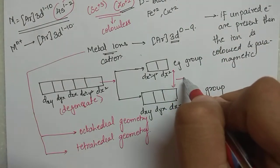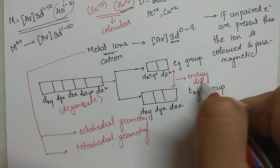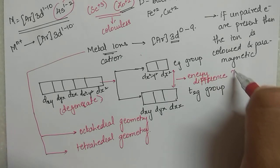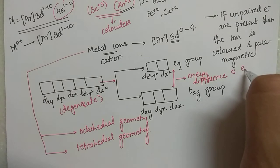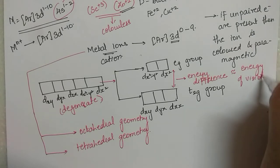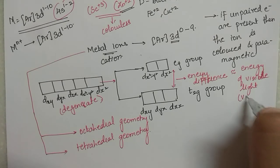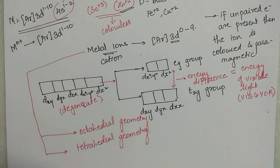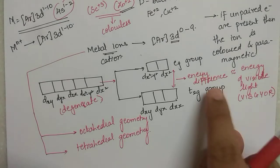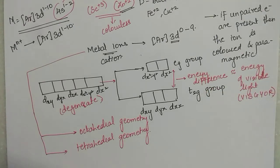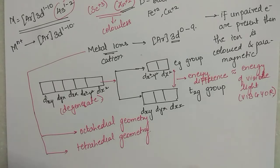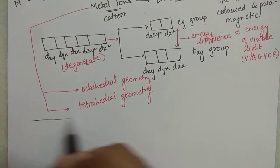All these things are important because the energy difference between the two groups is not very large — it is almost equal to the energy of visible light, which is VIBGYOR. Because this energy difference equals the energy of one of these colors of visible light, let's try to understand what happens due to this.